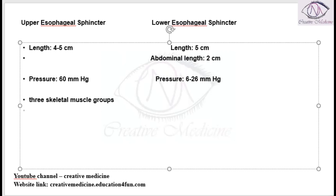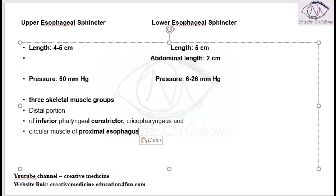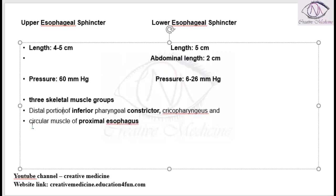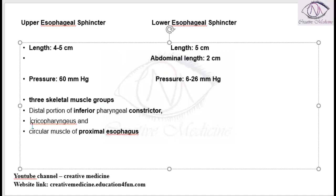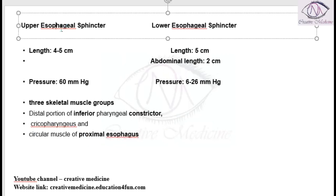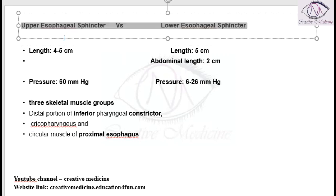The three muscles of the upper esophageal sphincter are: first, the inferior constrictor; second, the cricopharyngeus; and third, the circular muscles of the proximal esophagus — that is, the distal portion of the inferior pharyngeal constrictor, cricopharyngeus, and the circular muscles of the proximal esophagus.